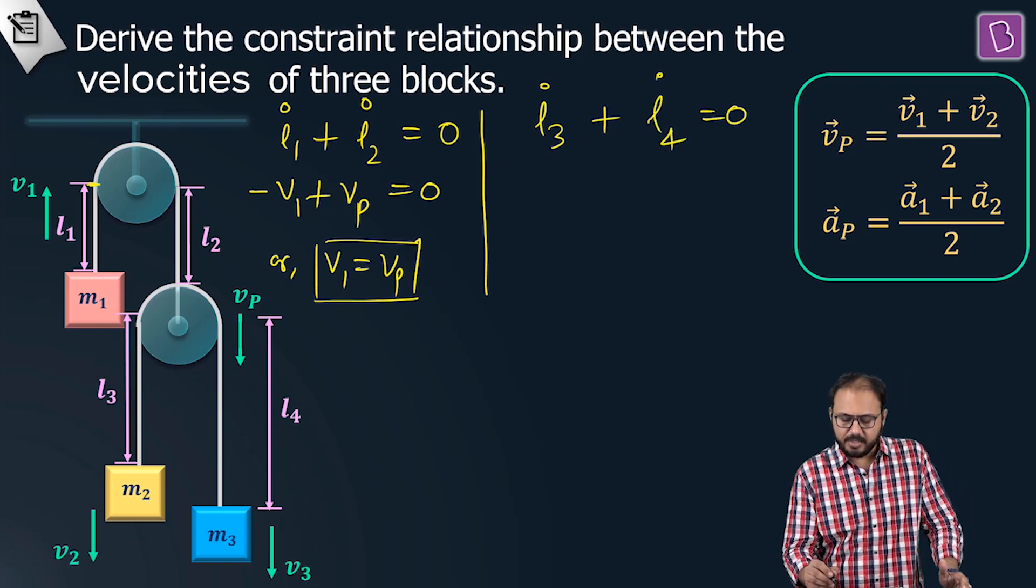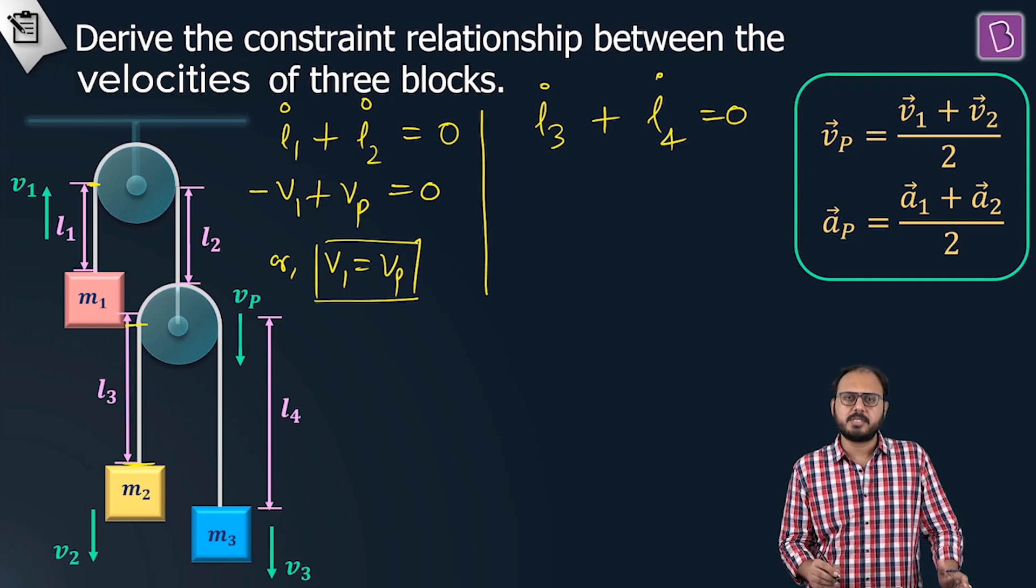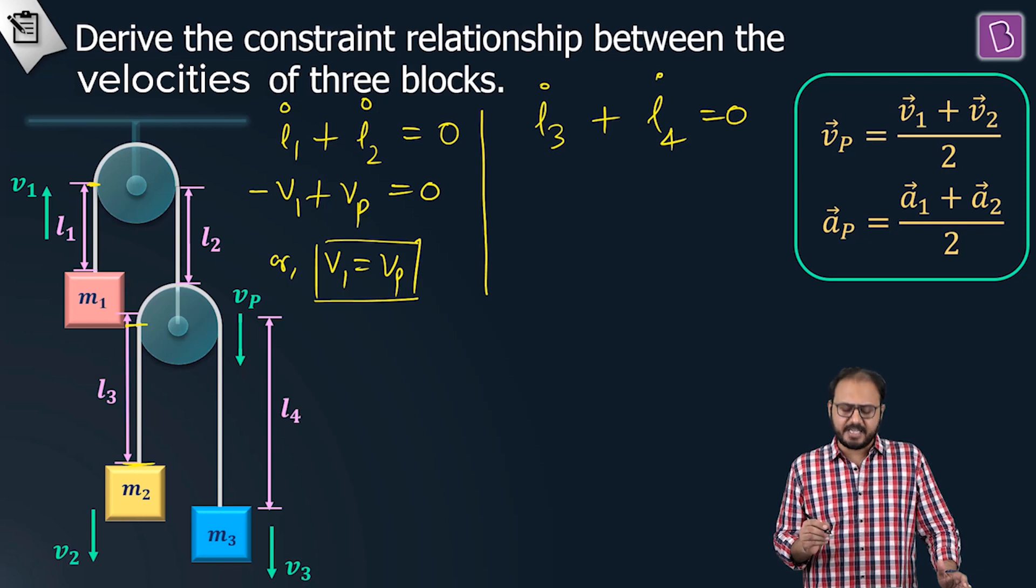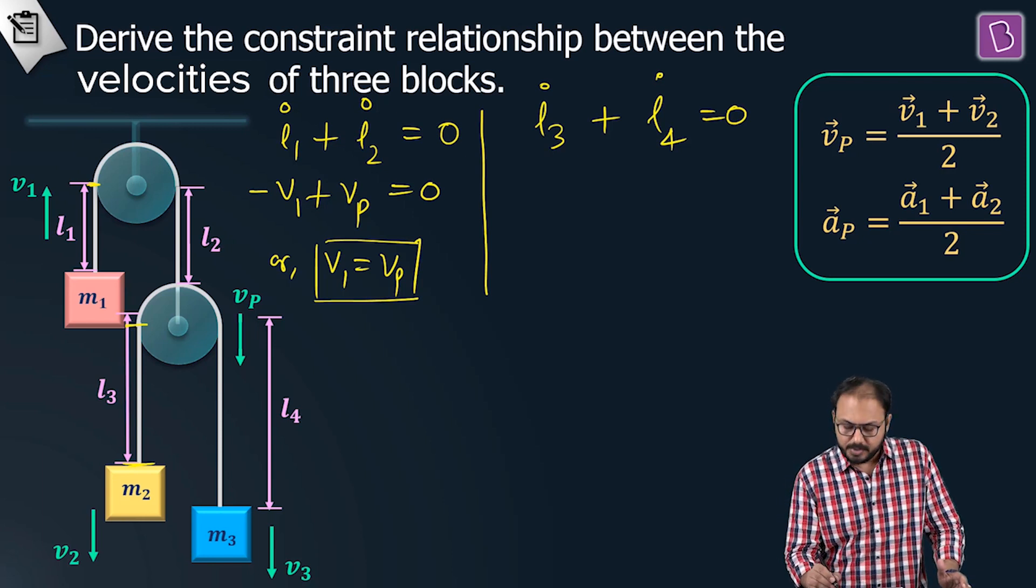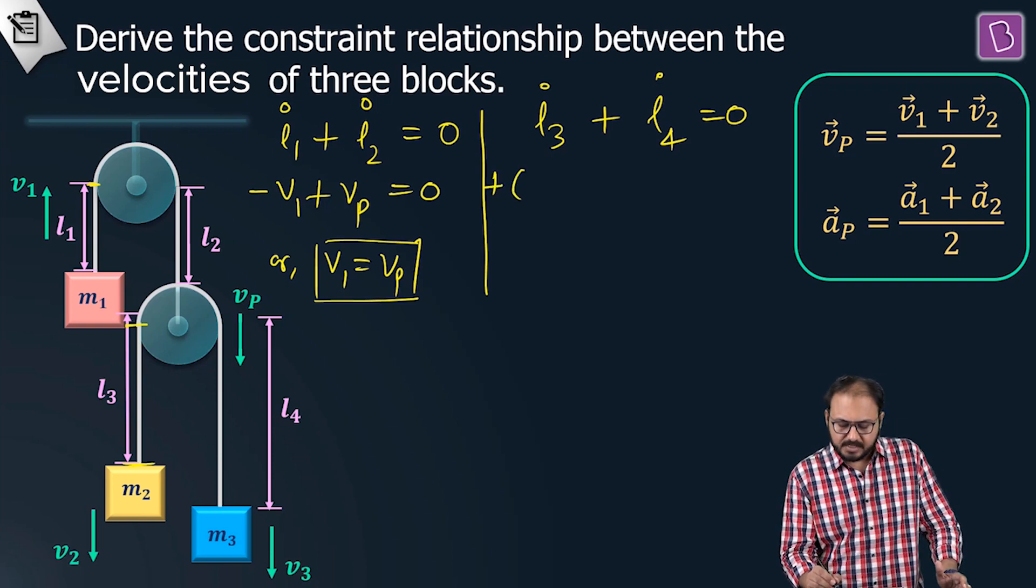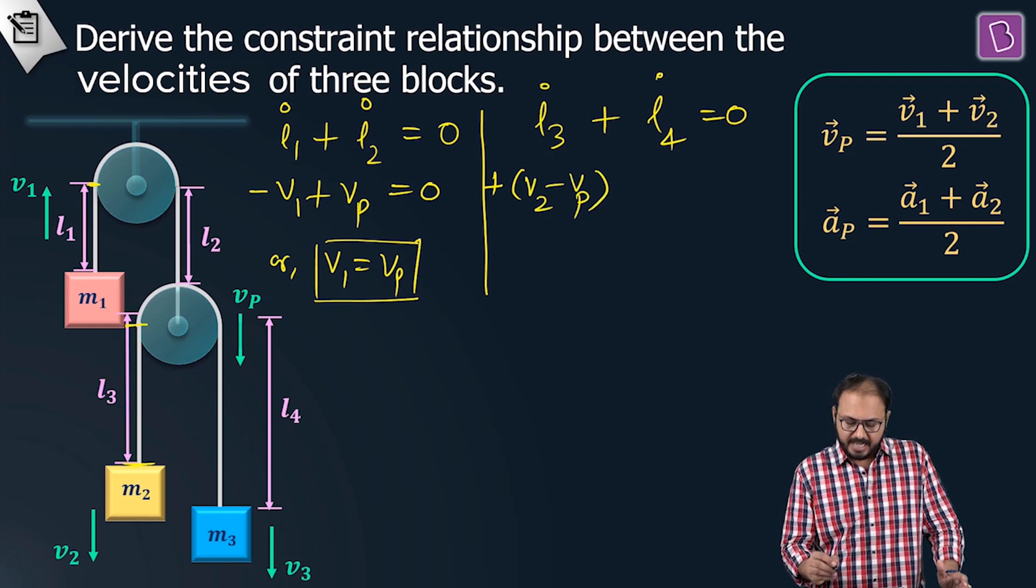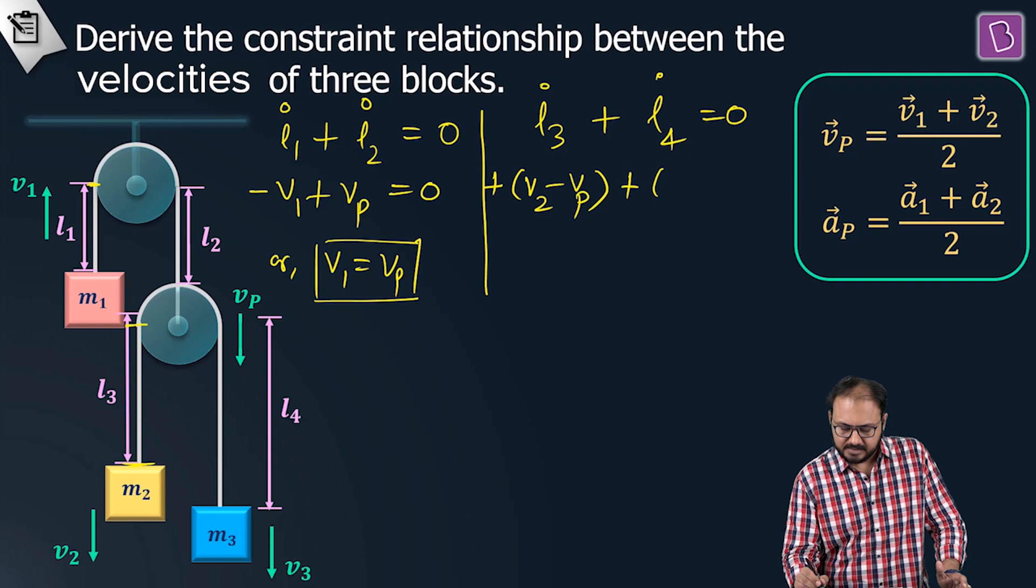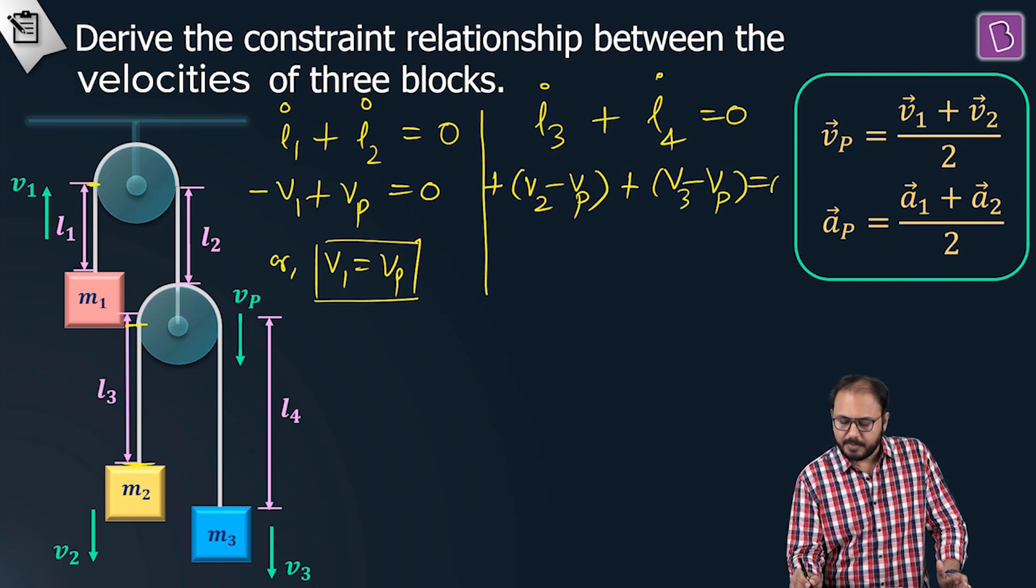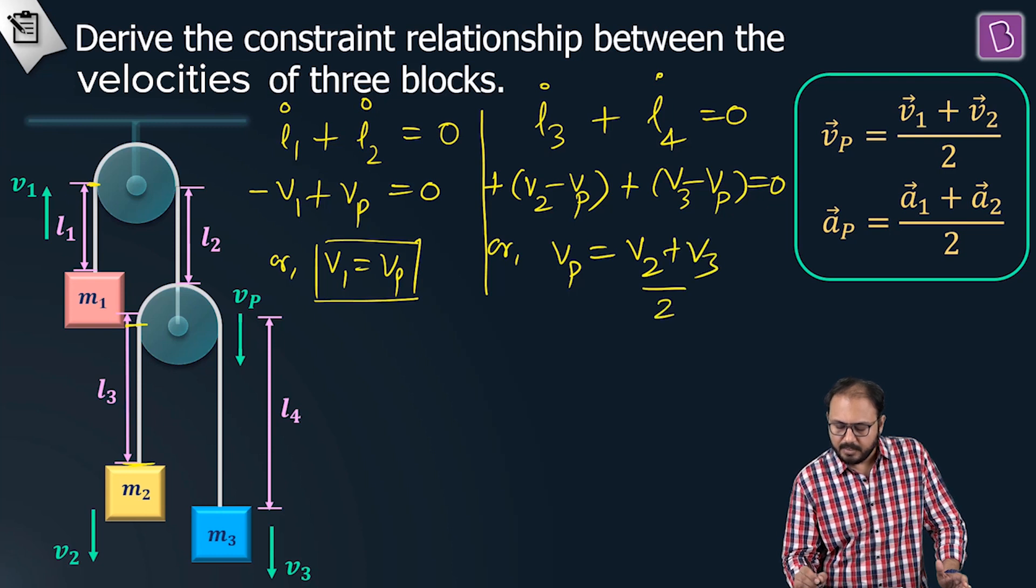Another one: l3 dot plus l4 dot is zero. Trapped between these two points, one point goes down. Can you comment which one is increasing or decreasing? You can't, but in life be positive, so write in the increasing sense: v2 minus vp. l4, again be positive: plus v3 minus vp equals zero. Or what do you get? vp equals v2 plus v3 by two.